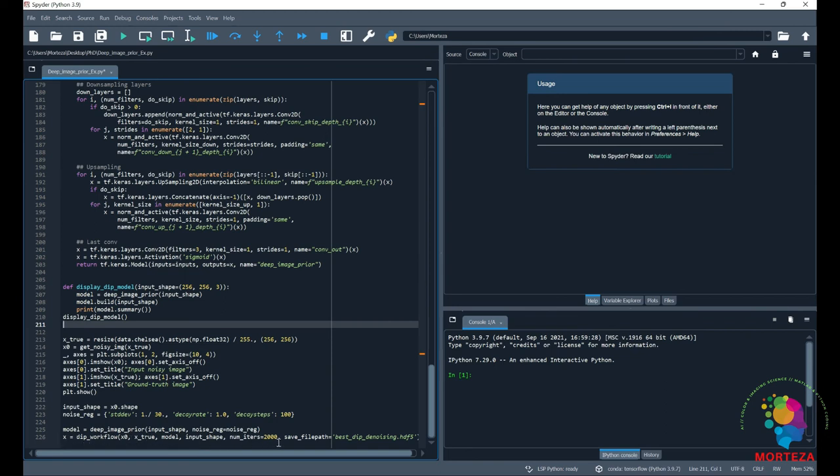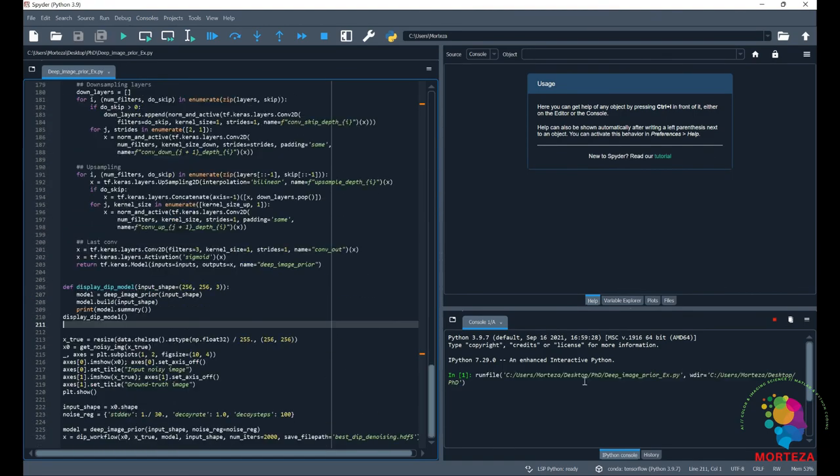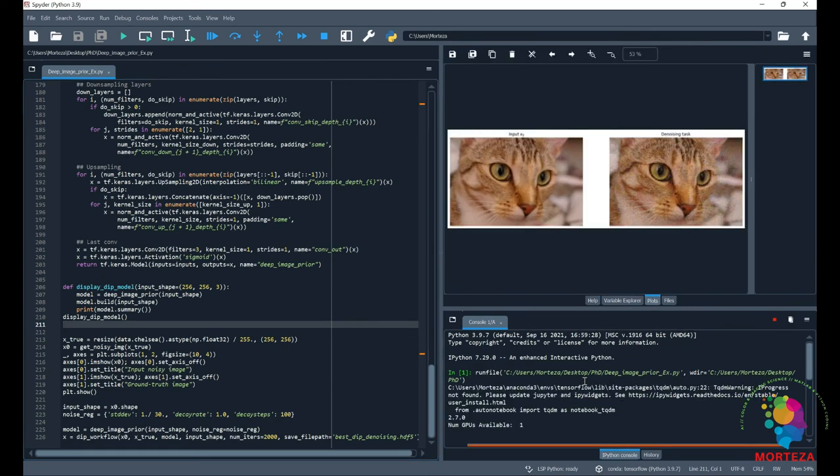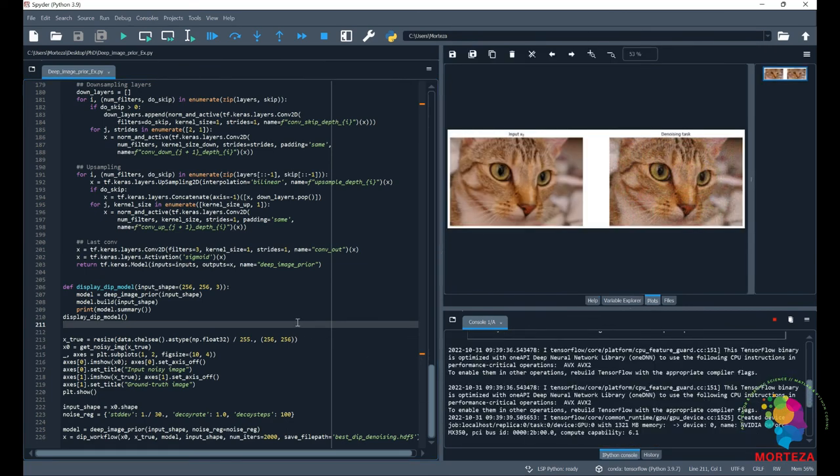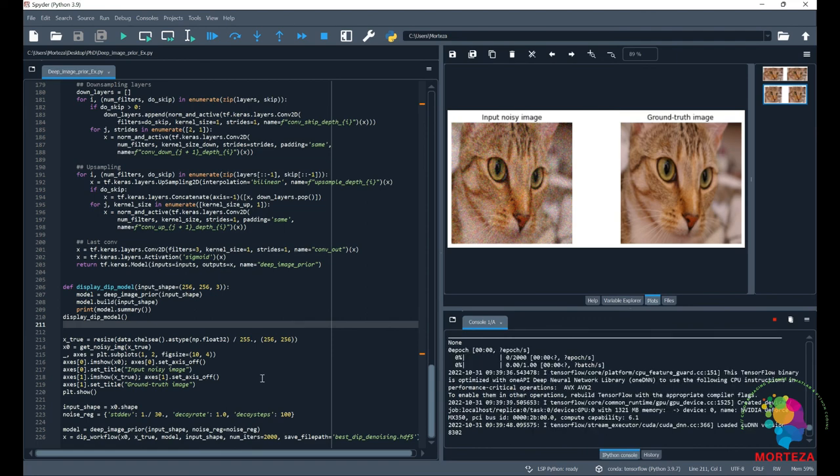And this is the main line that makes the deep image prior work. And I'm going to put 2,000 iterations here. Let's run and see what happens. The number of available GPU won. And now it's going to start running. It has about 2,000 iterations. Let's see what happens.